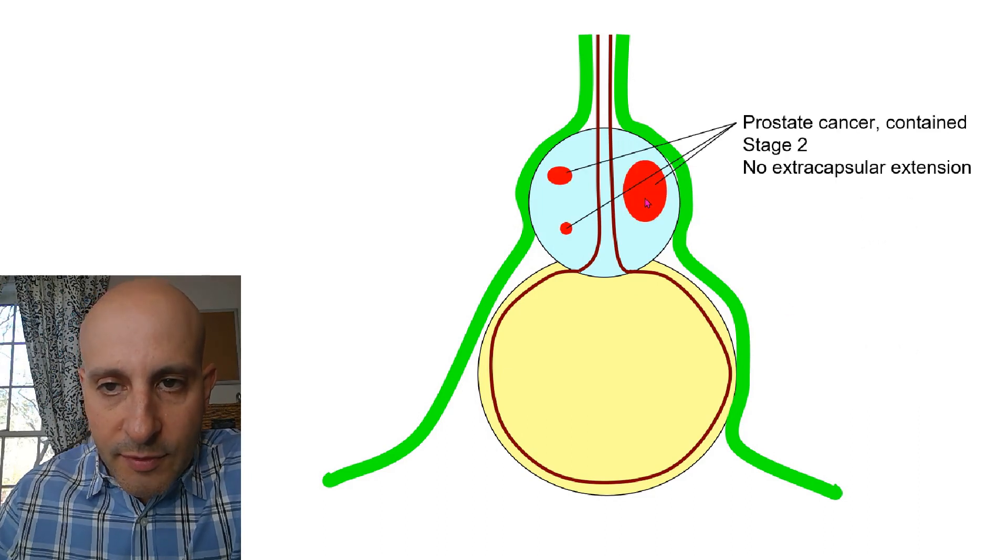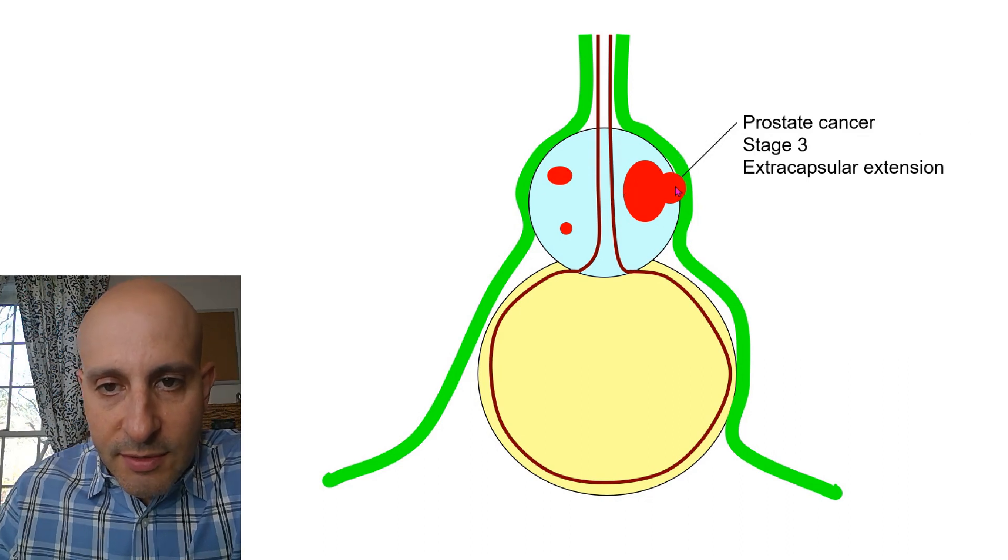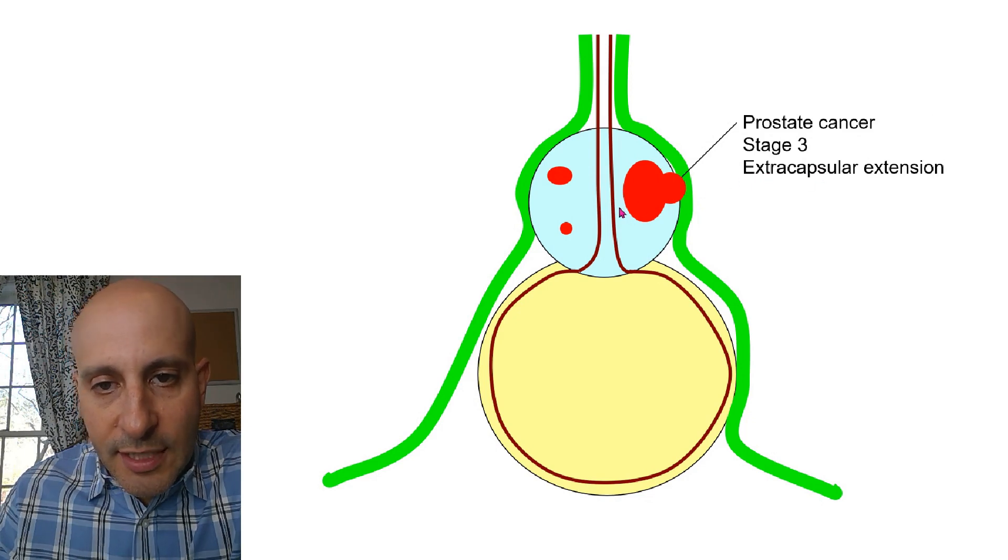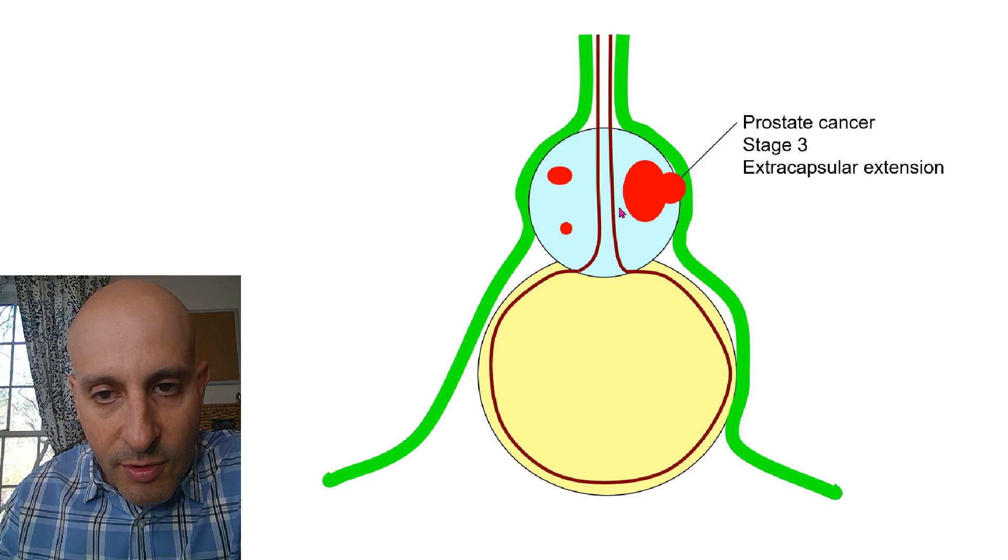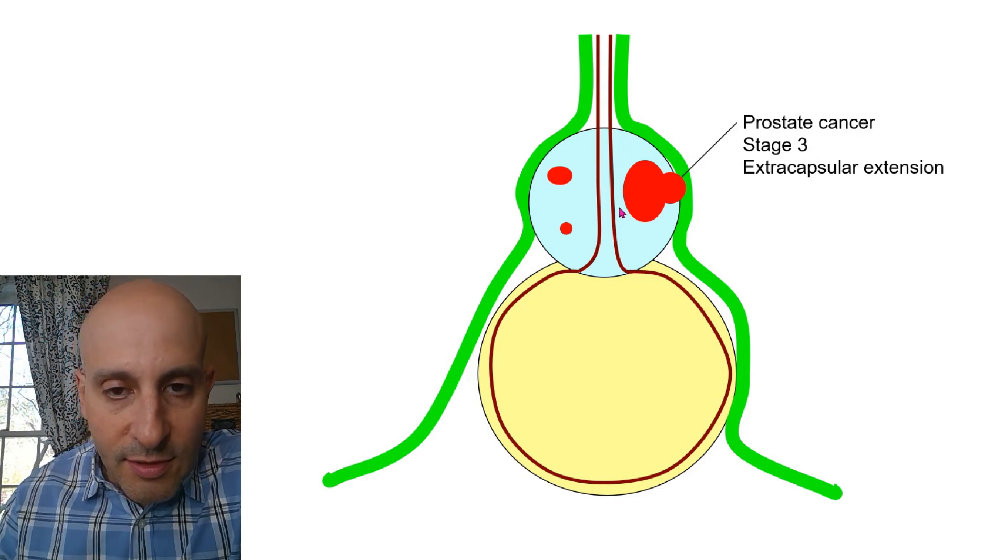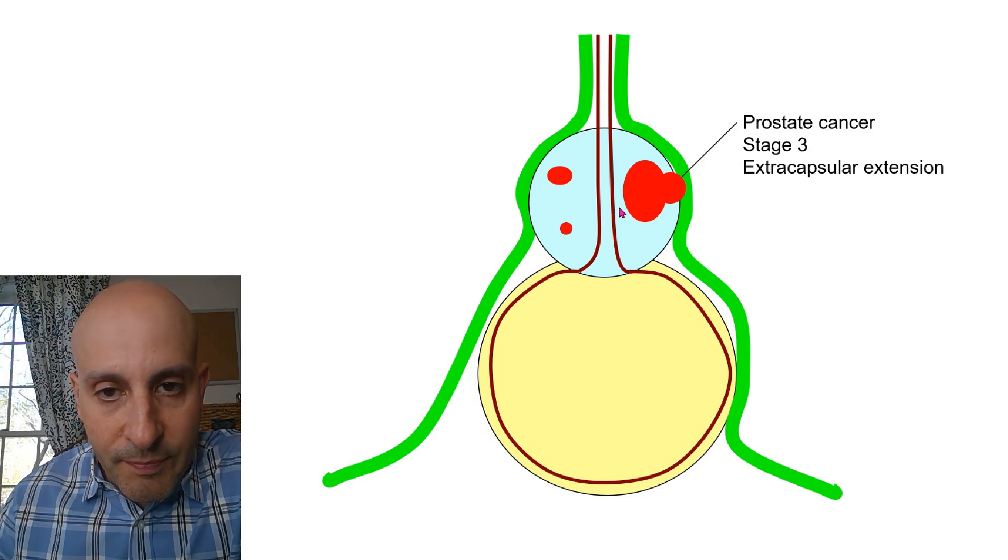This is an example of stage 2 contained cancer. And this is an example of stage 3 bulging cancer called extracapsular extension. Whether you have this situation or this, it's just the cancer card that you were dealt. This is the biology of the cancer, which the surgeon cannot control.